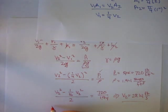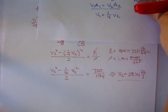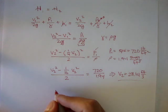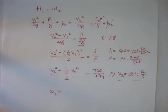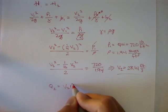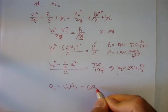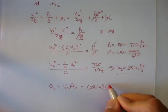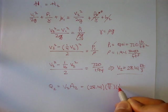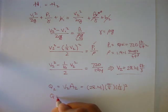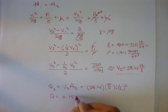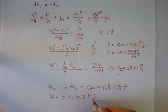And let's plug that into q2. And q2 is v2 a2 and v2 we found to be 28.14 times the area of 2 which is pi over 4 times 1 over 12. I just converted 1 inch to foot squared. And q is equal to 0.15347 foot cubed per second. And I know I said we will finish this in the next part. You know what? Let's finish it right now.